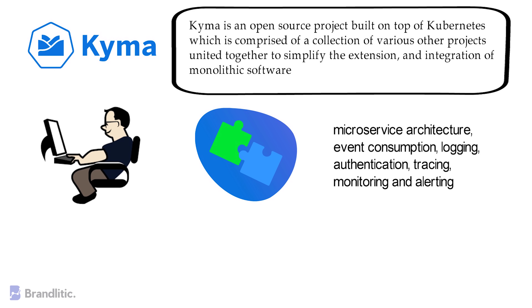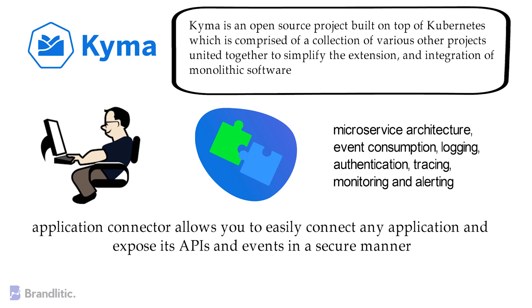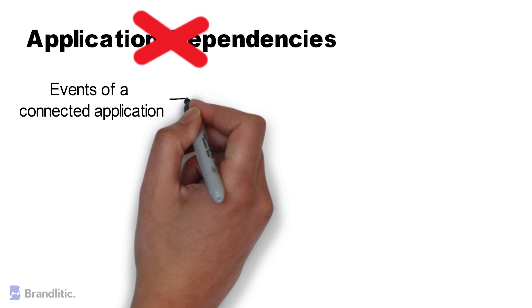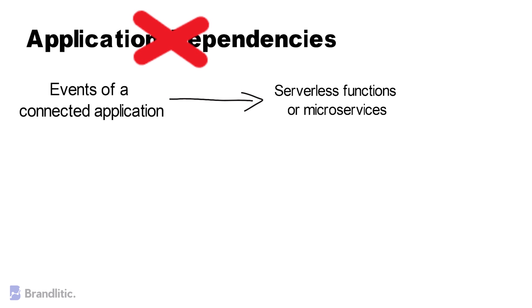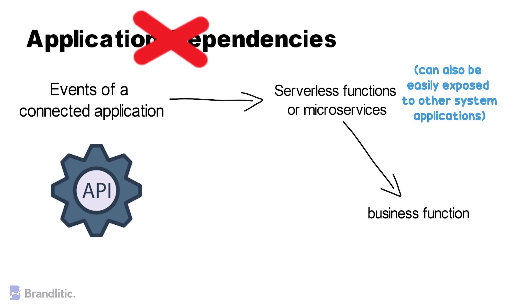The application connector allows you to easily connect any application and expose its APIs and events in a secure manner. Now you don't have to worry about any of the application dependencies. A developer can utilize the events of a connected application to trigger serverless functions or microservices to extend a business function. The APIs of the connected system can be used to provide integration between different systems and additional information related to the event flow. Further, both the serverless functions and the microservices can also be easily exposed to other applications.